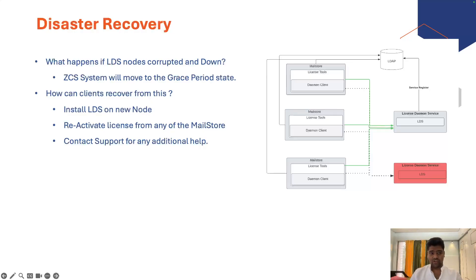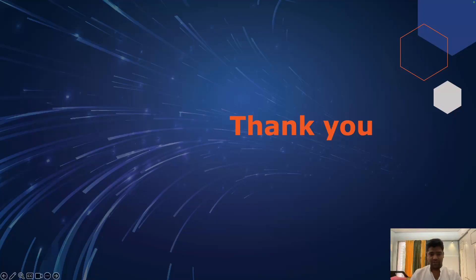Disaster recovery scenario: if your LDS node goes down or becomes corrupted, your system will move into the grace period state. To recover, install LDS on a new node and reactivate the license from any mail store. Contact support for additional help. That's all for this session — thank you and have a great day.